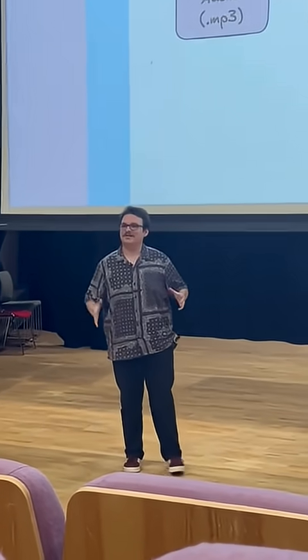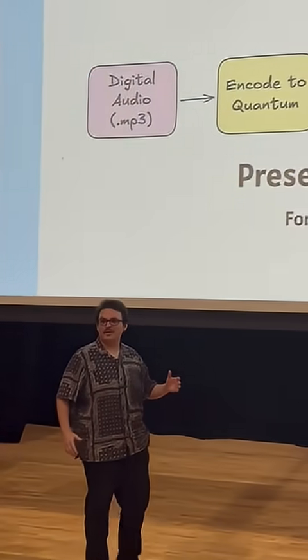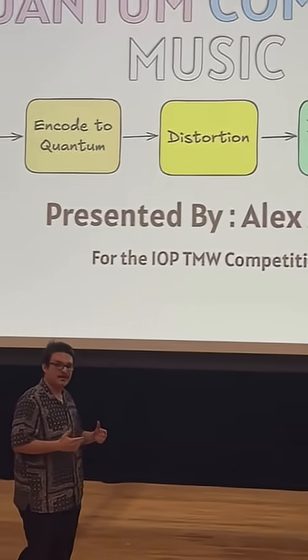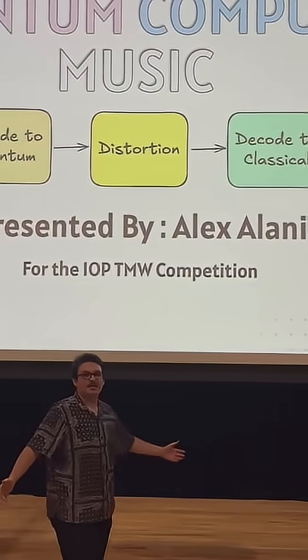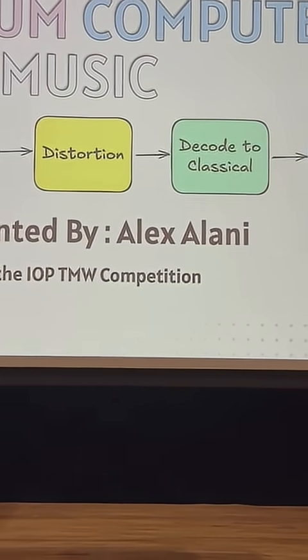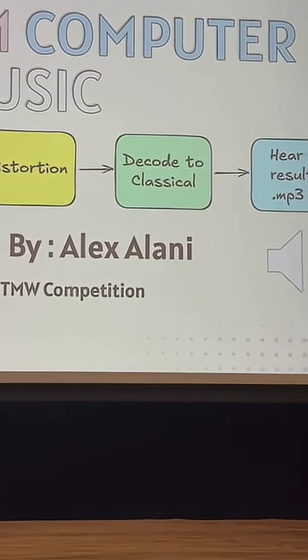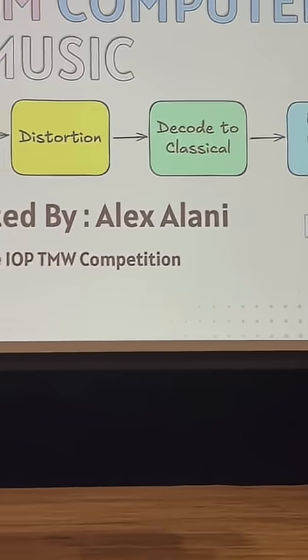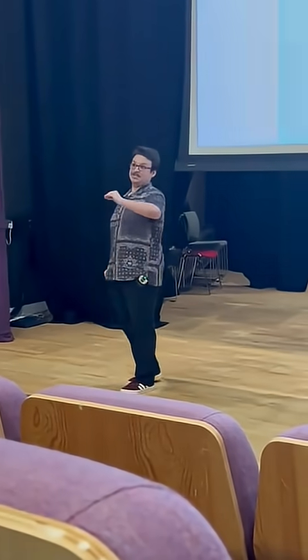To recap: take the digital audio we all know and love, like an MP3 file; encode the digital audio on a quantum computer; perform some operations, which is how I get distortion; then bring it back to the classical world to hear the results. In my research, it turns out that when I use certain gates — gates being ways to operate on the digital audio when it's on a quantum computer — I can get this sort of 8-bit video game Atari sound.